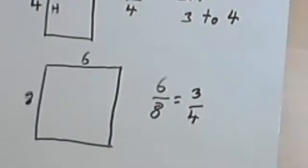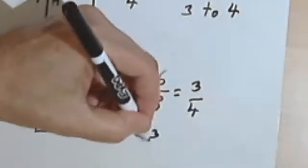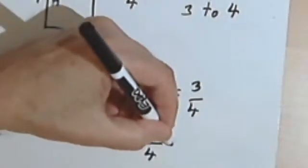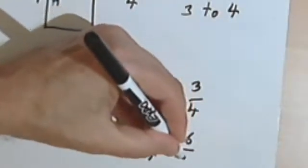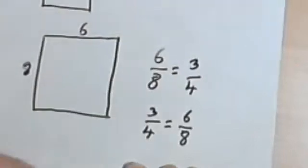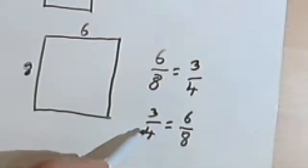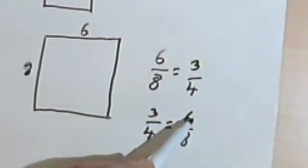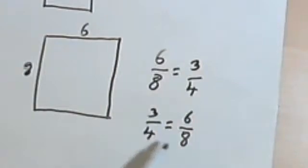Now if I compare two ratios, if I write 3 over 4 equals 6 over 8, I've got what's called a proportion. In other words, I'm saying these two ratios are the same thing. So let's see what we can do with that now.